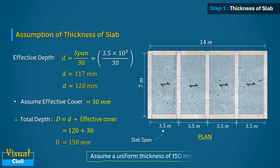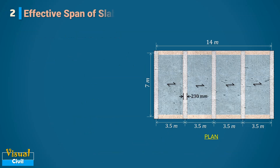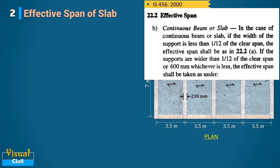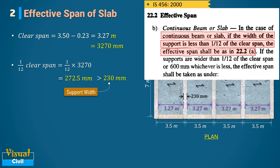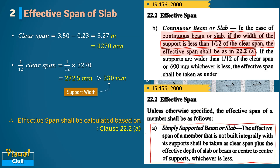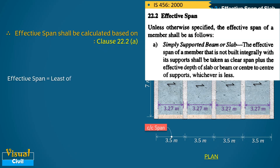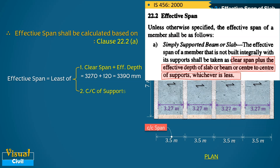As all slab spans are the same, we assume a uniform thickness of 150 mm for all spans. For the effective span, as per clause 22.2b, in case of a continuous slab, if the support width is less than 1/12 of the clear span, the effective span shall be as per clause 22.2a. Here, the clear span is 3.27 m, so 1/12 of clear span equals 272.5 mm, which is more than the beam width of 230 mm. Therefore, the effective span equals 3.39 m.